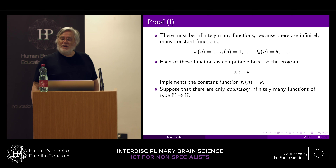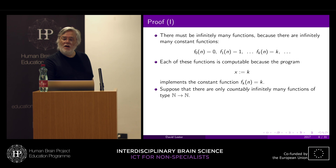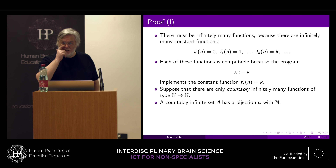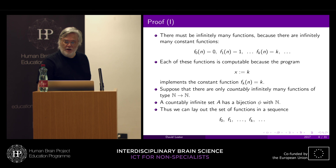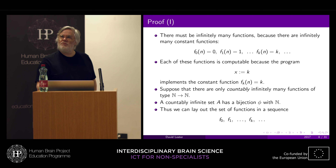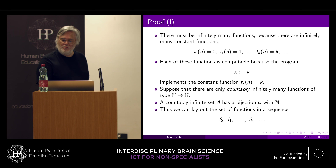Suppose there were only a countable number of functions from natural numbers to natural numbers. What does that mean? It means there's an enumeration — a bijection between the natural numbers and the set. So we can enumerate them as a sequence of functions, labelled f0, f1, fk, and so on. That's what the bijection gives us.